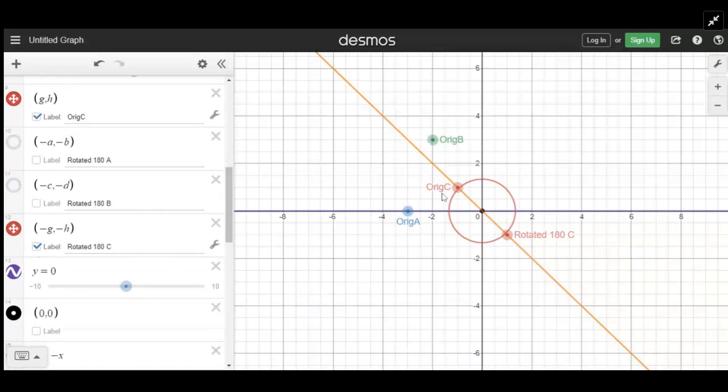Notice this was at negative x, positive y. This is at positive x, negative y. We kept the same numbers in the same place, just negated both of them.